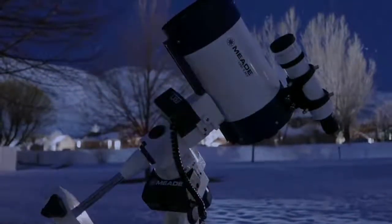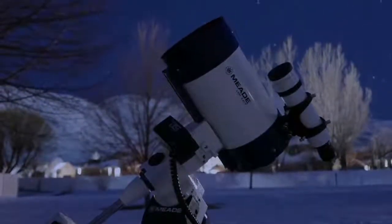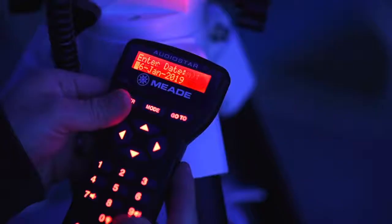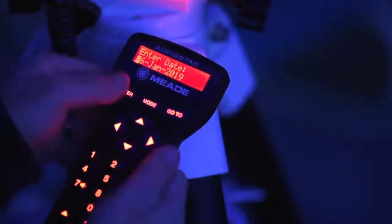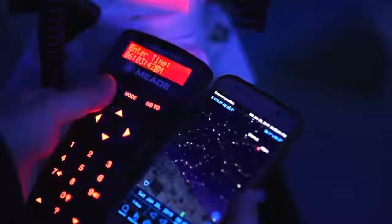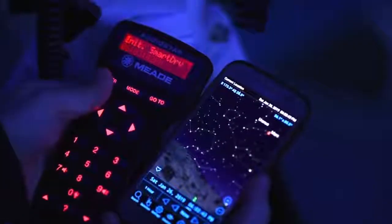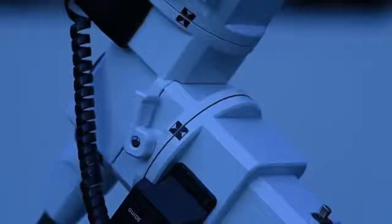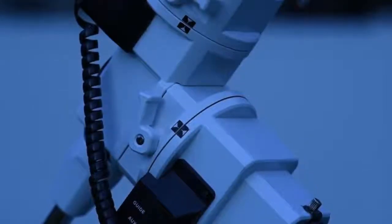Before performing the easy alignment, be sure to put the telescope back into the home position. Next, enter the date and time. Once done, initializing Smart Drive will appear on the screen. The mount will move slowly for up to 60 seconds while it searches for the right ascension worm index sensor. System initialization is now complete and AudioStar enters into the easy alignment routine.